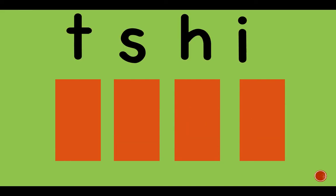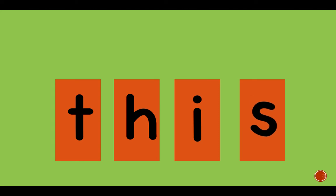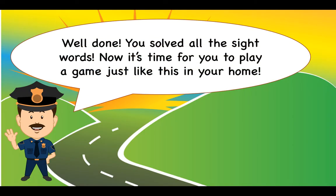Our last sight word now. What do you think this word is? It is the word this. How do you spell this? T. H. I. S. This. Like this is a pen. This. Well done. You solved all the sight words. Now it's time for you to play a game just like this in your home.